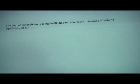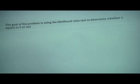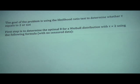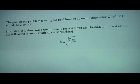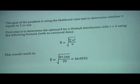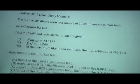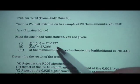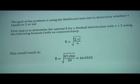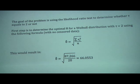First, the goal is to use the likelihood ratio test to determine whether tau equals 2 or not. You want to determine the optimal value of theta for the Weibull distribution with tau equals 2, using the formula: theta equals the square root of the sum of the squared data points over N. This gives you 66.0553, using the sum of squared data points 87,266 over the total of 20 data points.